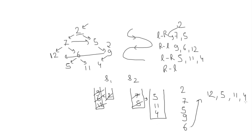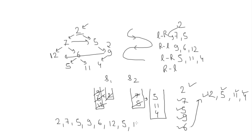Now iterating the final level: 5, 11, and 4 all do not have any left or right, so I just keep on printing 5, 11, and 4. Overall, what I have printed is: 2, then 7, then 5, then 9, then 6, then 12, then 5, then 11, then 4 — making the spiral at each level.